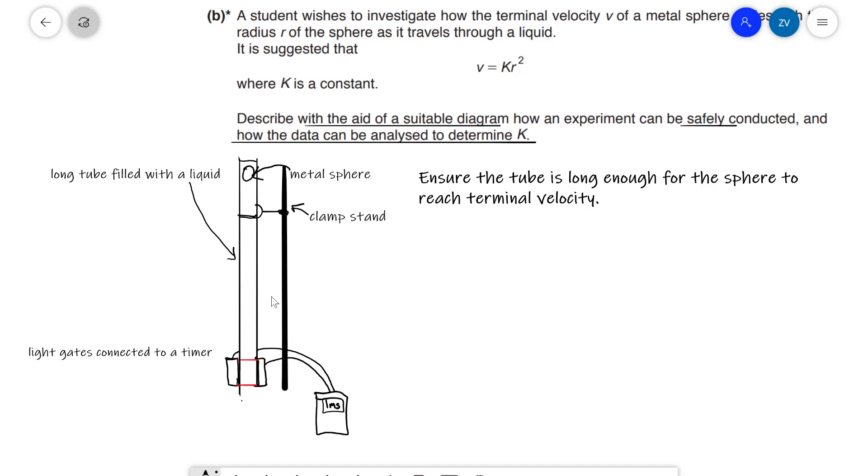The whole apparatus is clamped on a clamp stand. And this is to ensure that this is part of our safety net, essentially, just to ensure that we can conduct the experiment safely. Now, here is a really important tip. What we also need to do is measure the velocity. Now, the best way to measure velocity in almost all cases within experimental extended six marker questions is to use light gates connected to a timer. Now, how does a light gate work?